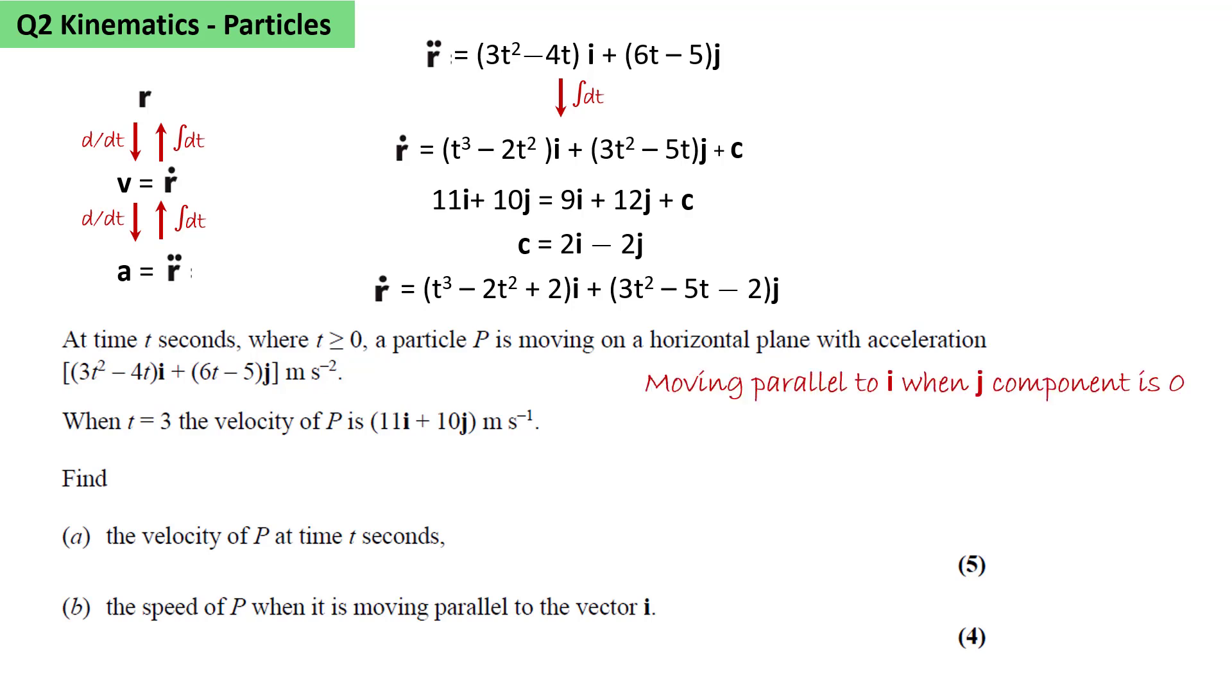We're asked to find the speed of P when it's moving parallel to the vector i. This means the j component must be 0. So we set 3t² - 5t - 2 = 0. We solve it. The only positive solution is t = 2. And we substitute this to get ṙ = 2i.